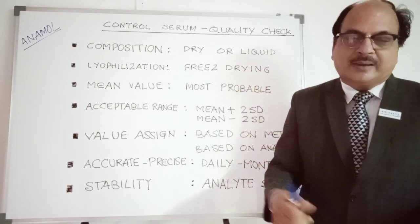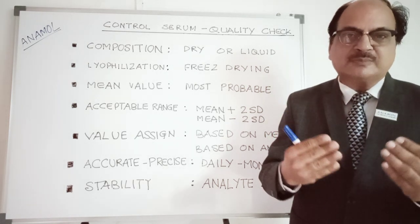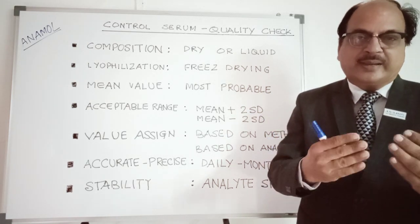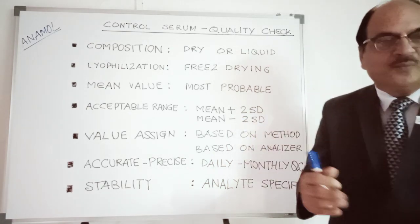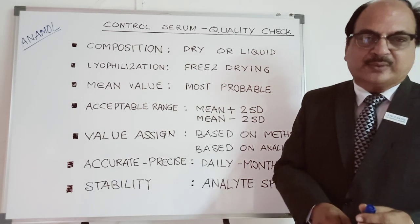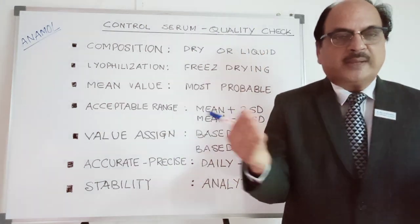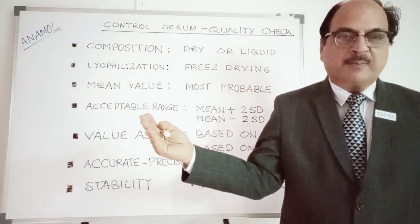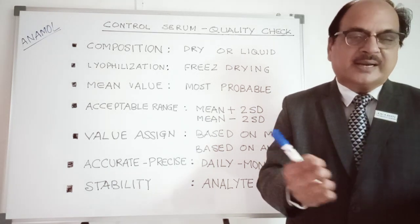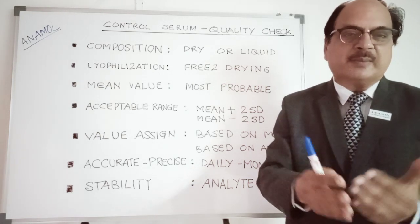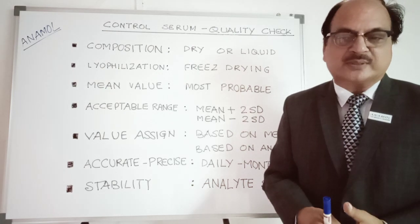What is control serum? Control serum is a commercially available serum sample. Largely, they are either in the liquid form or in the dry form. Liquid form quality control is easy to prepare — it involves pooling of various serum samples and stabilizing it, either with ethylene glycol and antibacterial reagents or some other proprietary technology used by various manufacturers.